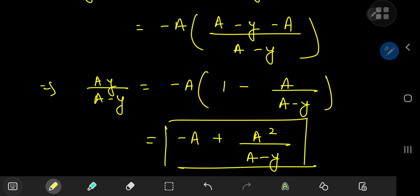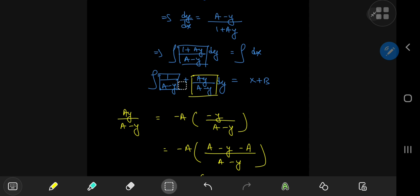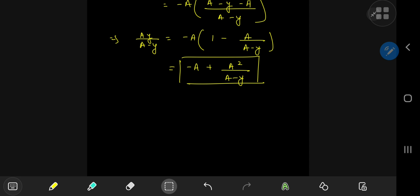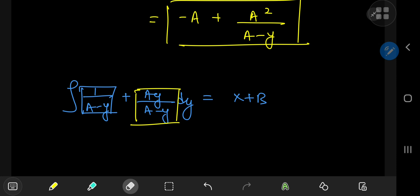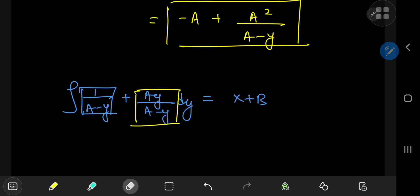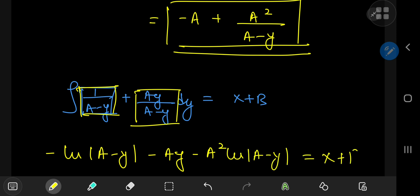And now using this result for our integration problem that I'm just going to copy down here for a better visual of things. So the first term here, the antiderivative is negative log (a - y). And integrating the right-hand side of the equation in yellow, we have negative a times y minus a² times log (a - y). And on the right-hand side, we have x + b.